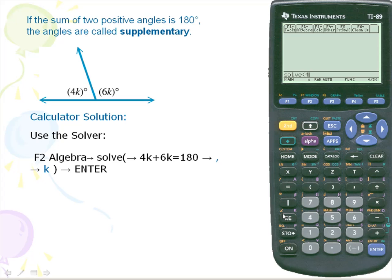We want to put in 4k. So notice that k is located above the EE key plus 6k is equal to 180. We're going to put in a comma and a variable of our function is k.